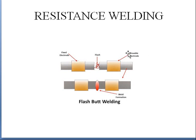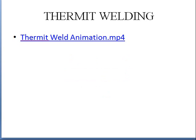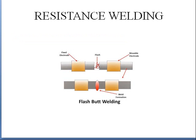Next one is flash butt welding. In flash butt welding you have one fixed electrode and one mobile electrode. When these electrodes come closer, there will be some flash between the fixed and movable electrode; as a result, at the junction you will get the joining of both the metals, so you get the weld at that area. Thank you for listening. In the next class we will see about thermite welding, explosive welding, laser welding, and more. Thank you.